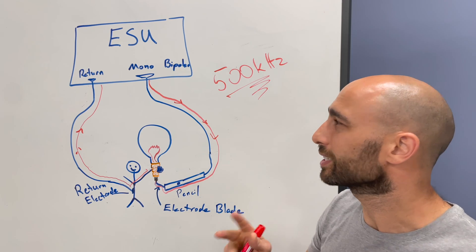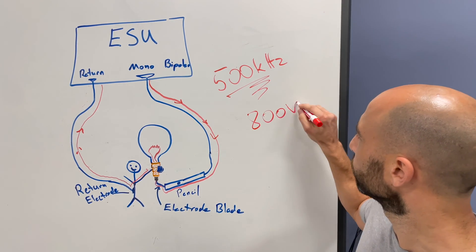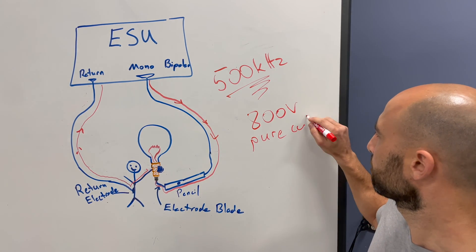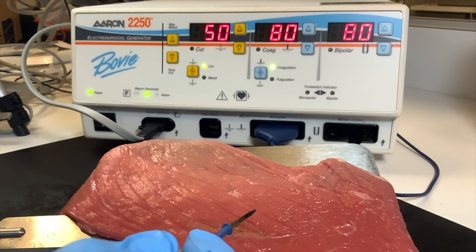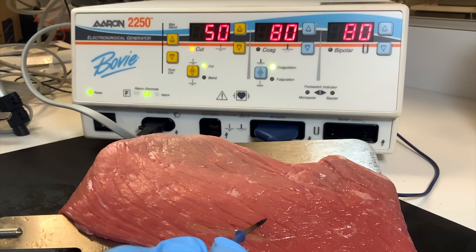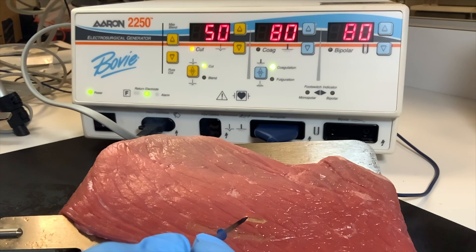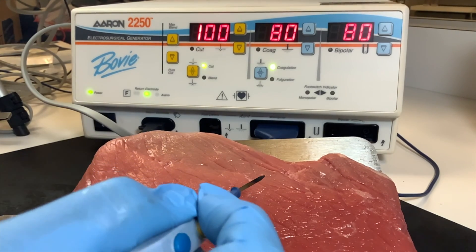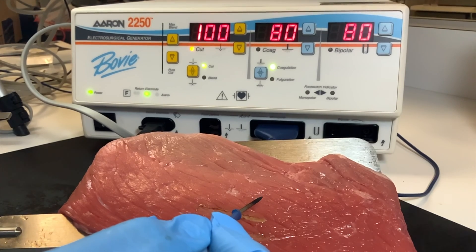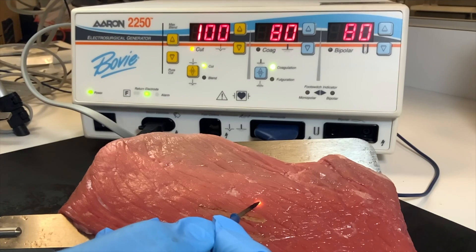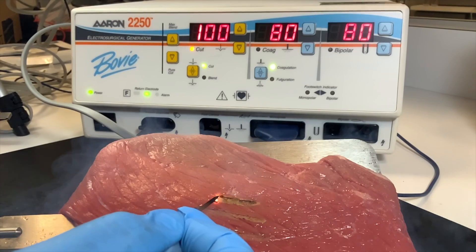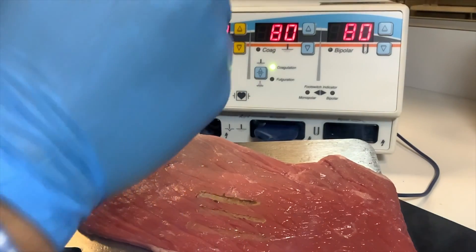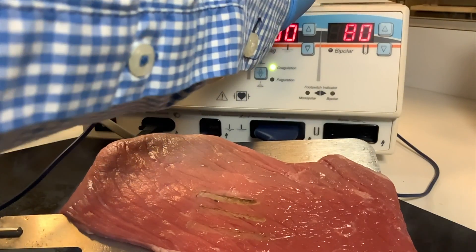As a general rule of thumb, you can expect around 800 volts for a pure cut mode. In monopolar mode, you have two options: cut or coag. Cut is going to be shown at two different levels — now doing a cut at 50 watts, and now you're going to see a cut at 100 watts. The cut at 100 watts is going to have a larger impact on the tissue, more destruction, because it's heating the tissue up more and increasing the current going through the meat.